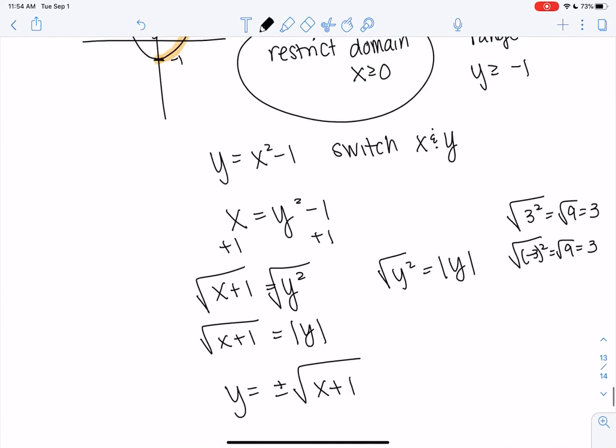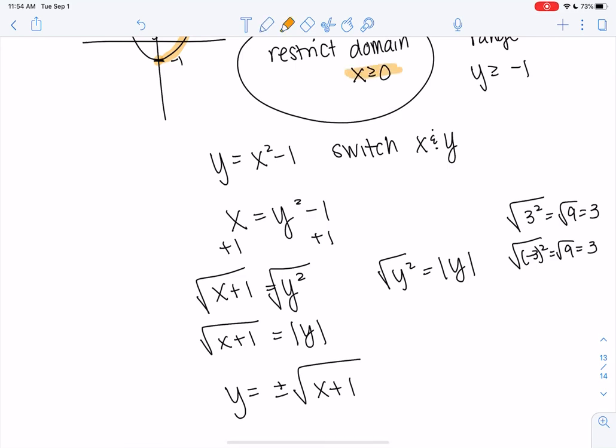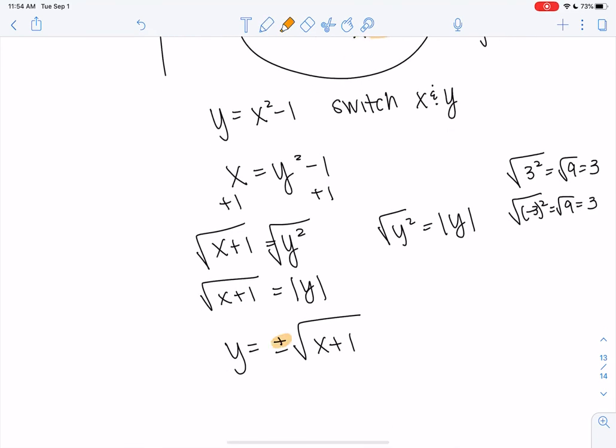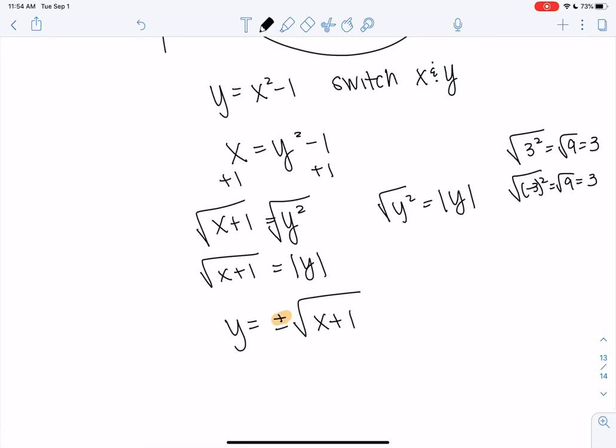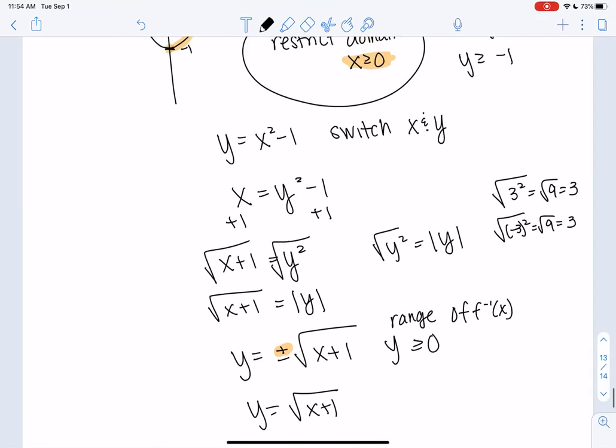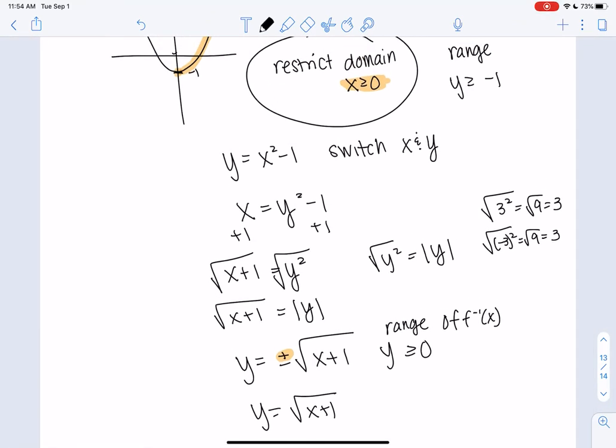And that is why restricting the domain made this work. Because we restricted the domain, we only need the positive case. And if we didn't do it, it wouldn't work. So y equals square root of x plus 1 from the restricted domain. And that's because y is greater than or equal to 0, right? If the domain of f is greater than or equal to 0, then the range of f inverse is greater than or equal to 0. So that's why you can get rid of the negative case.